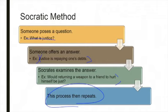The Socratic method is: we are presented with a problem, we offer an answer, we examine the answer, and it's not uncommon for us to find exceptions, find problems with the answer. The questions we're going to be looking at are hard questions — if they were easy questions, we wouldn't be looking at them.